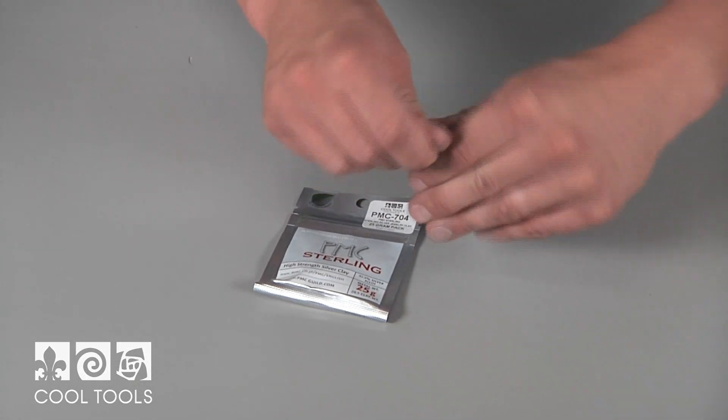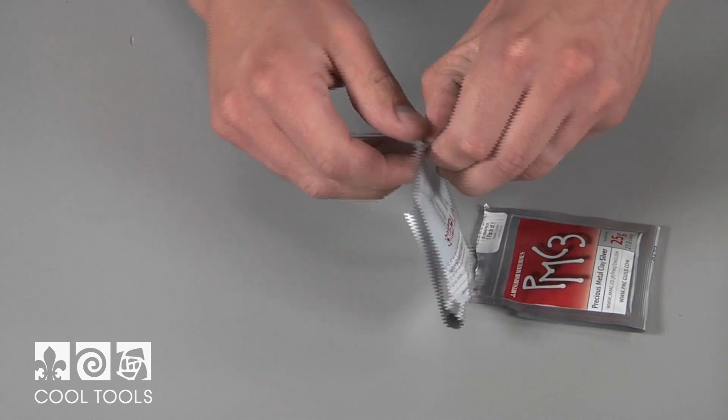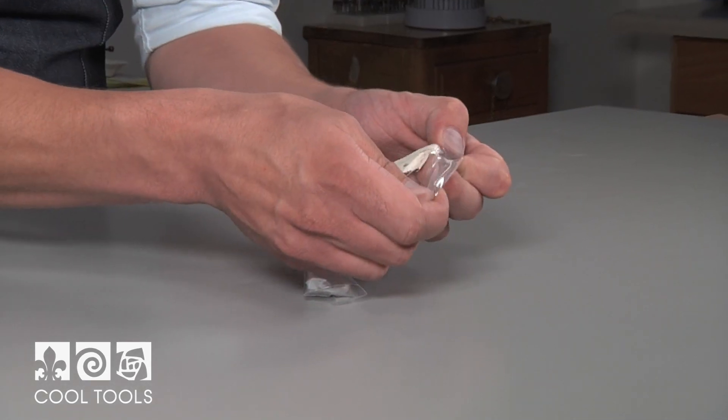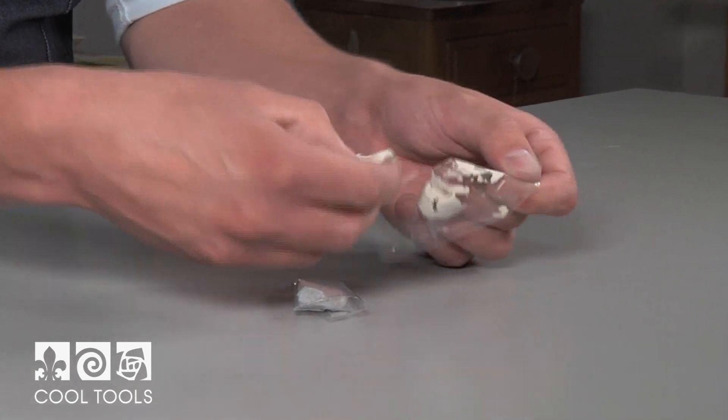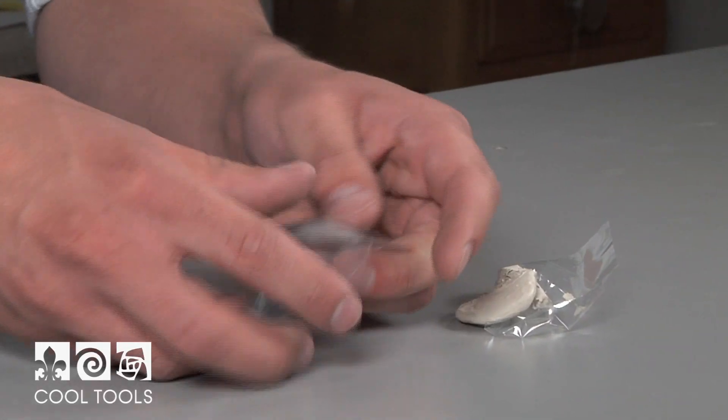To mix the clays, start with equal parts of PMC III and PMC Sterling. Mixing these two 25 gram packs will result in 50 grams of clay, so choose the amount of clay you'll want to end up with. Open the packs and begin mixing the two clays with your hands. No water or oil is required during mixing.